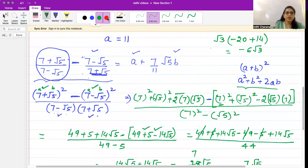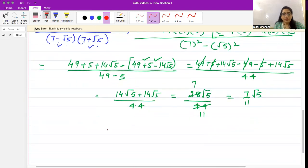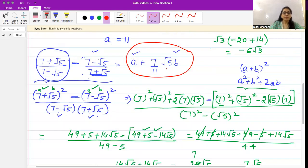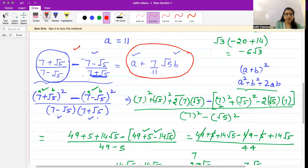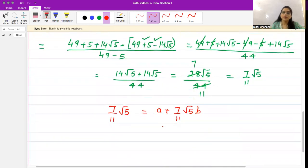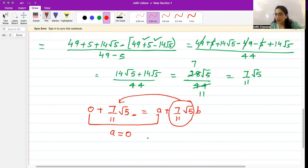Now in our question we had this given equal to a + 7/11 √5b. So we have 7/11 √5 equals a + 7/11 √5b. We have solved this part which gives us 7/11 √5. Now here we don't have the 'a' term given, so we can take a as 0. So a equals 0. And b - this term is already here, so what is b? b would be 1. So b equals 1. I hope this is clear.